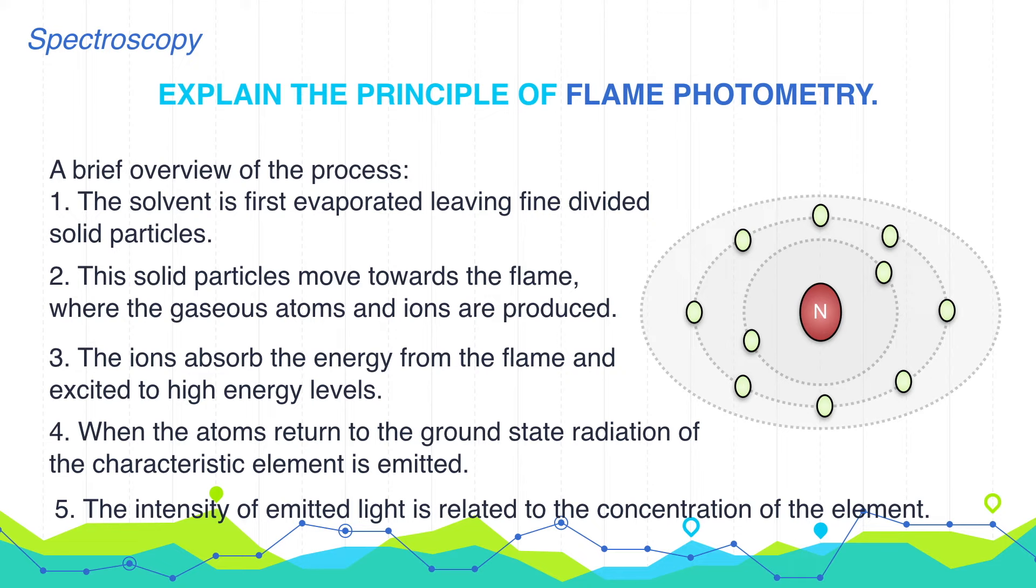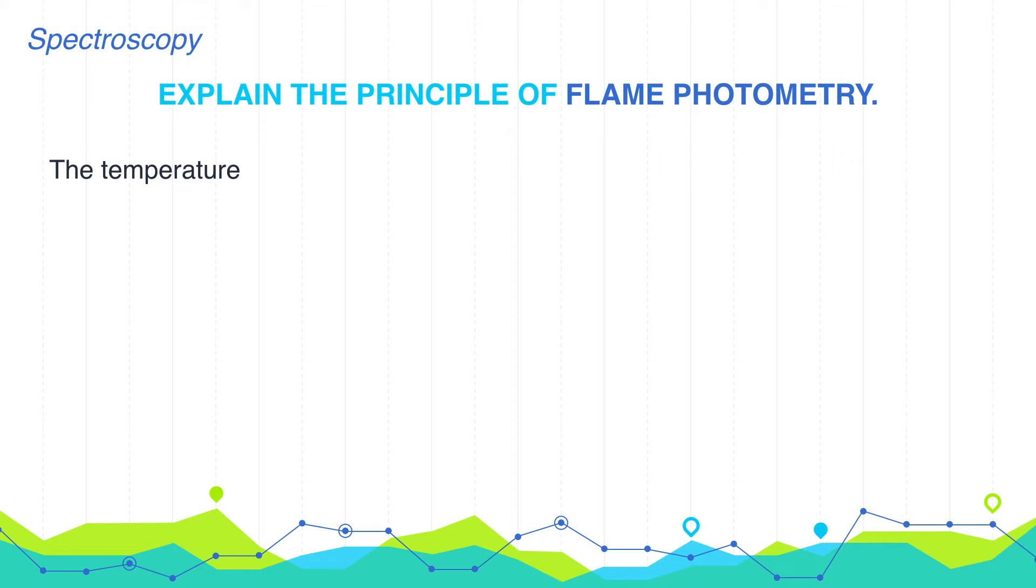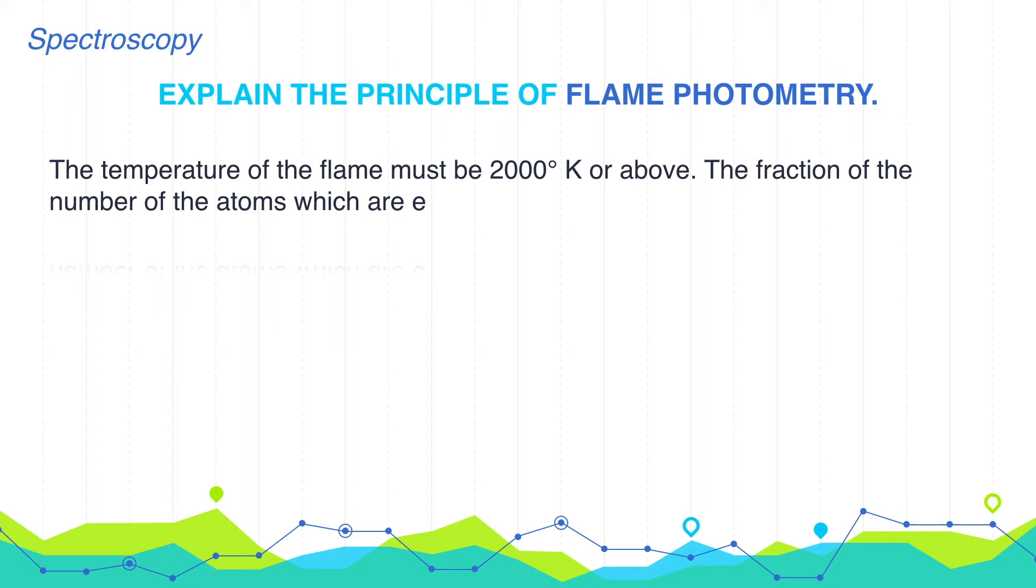The temperature of the flame must be 2000 degrees Kelvin or above. The fraction of the number of atoms which are excited is given by Boltzmann equation. That is, N1 by N0 equals A E power minus delta E by KT.